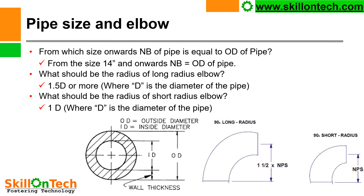Pipe size and elbows — from which size onwards is the nominal bore (NB) of a pipe equal to the OD of the pipe? From 14-inch size and onwards, the OD of the pipe is used as the nominal bore. What should be the radius of a long-radius elbow? Long-radius elbows are 1.5D, where D is the diameter of the pipe. What should be the radius of a short-radius elbow? 1D, where D is the diameter of the pipe. Pictures of long-radius and short-radius elbows, and the ID/OD of pipe with wall thickness, are shown for reference.